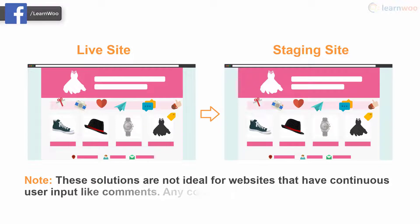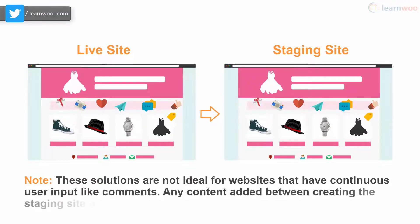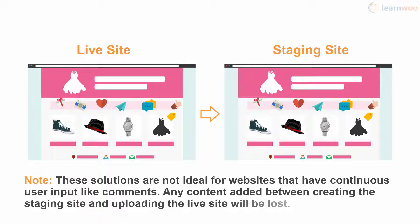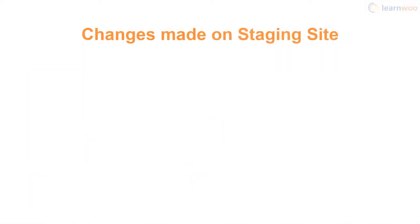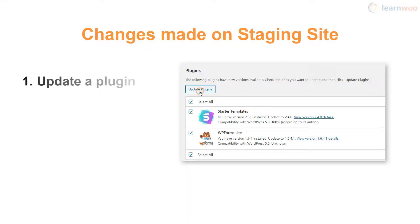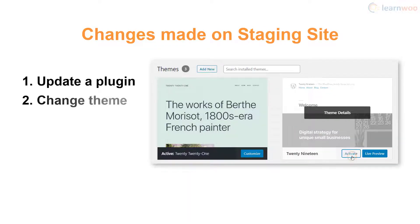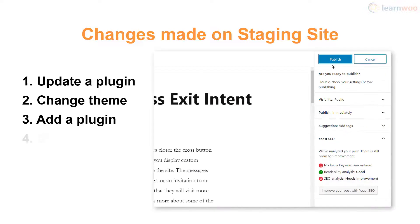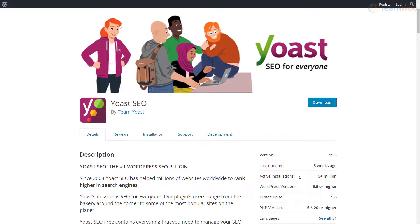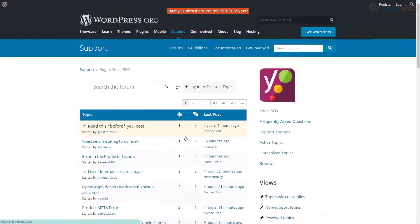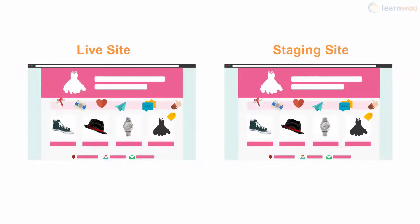Note that this solution is not ideal for websites that continuously take user input like comments, as any content added between creating the staging site and uploading the changes to the live site will be lost. You can now make and test any changes you want. For the sake of this video, we will update a plugin, change the theme, add a new plugin, and create a new post. If you face any errors, refer to the forums or contact the plugin or theme developers.